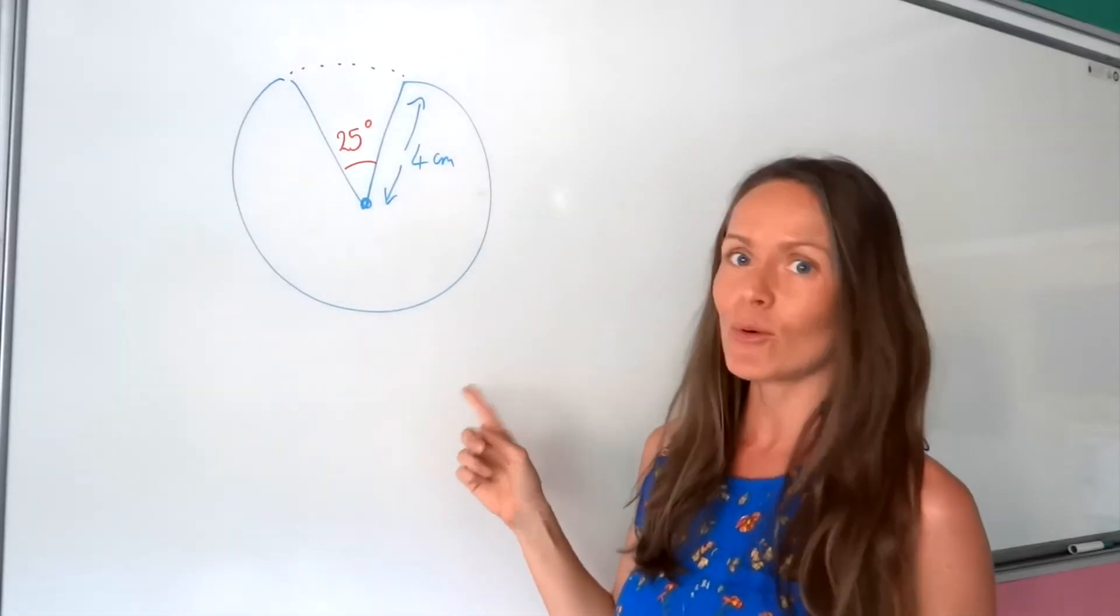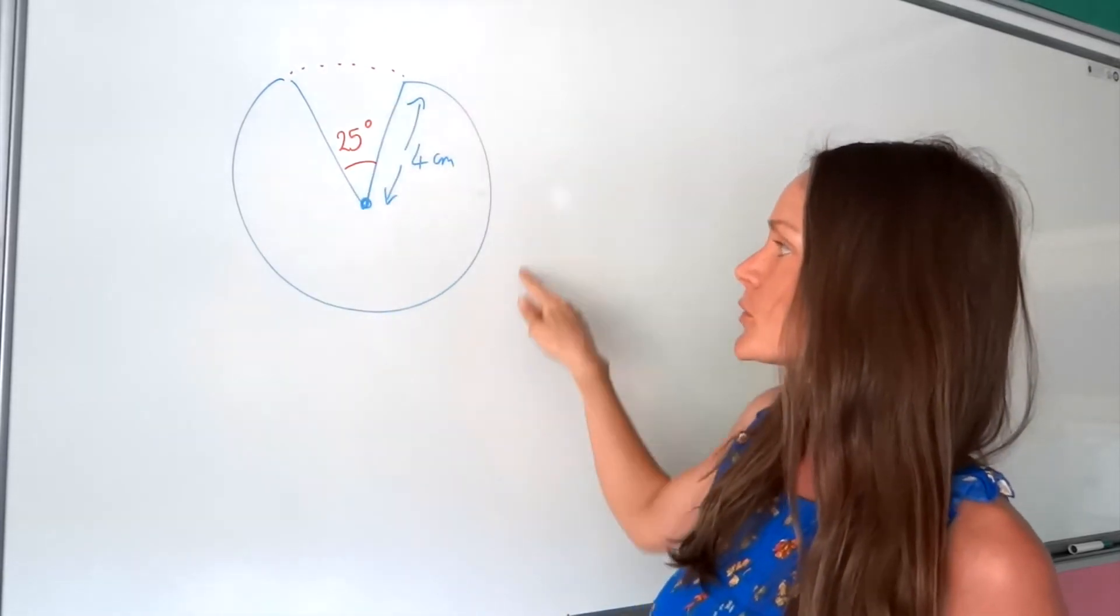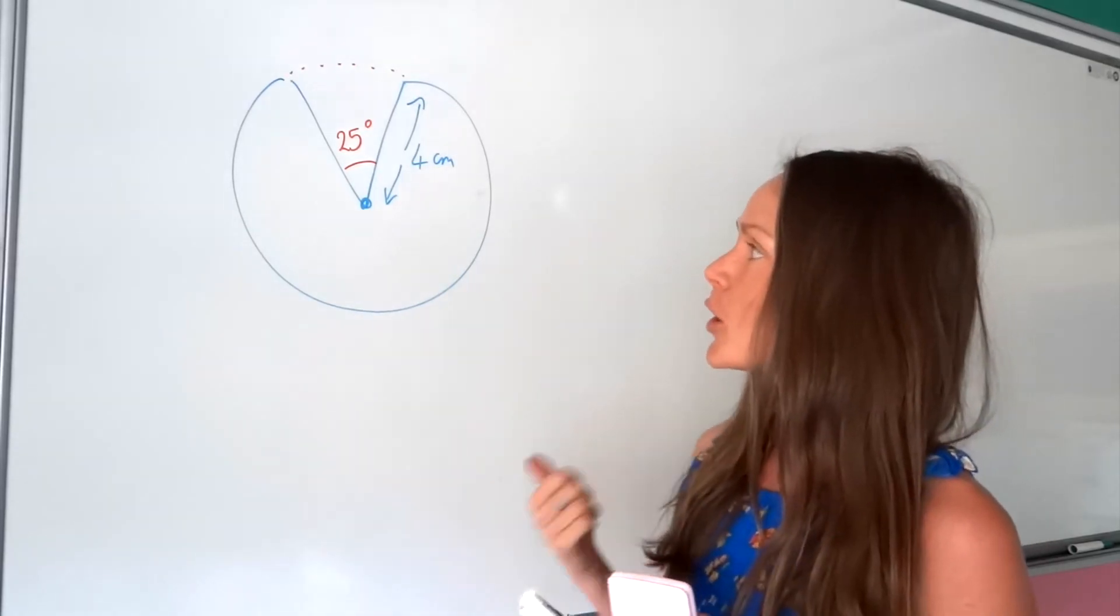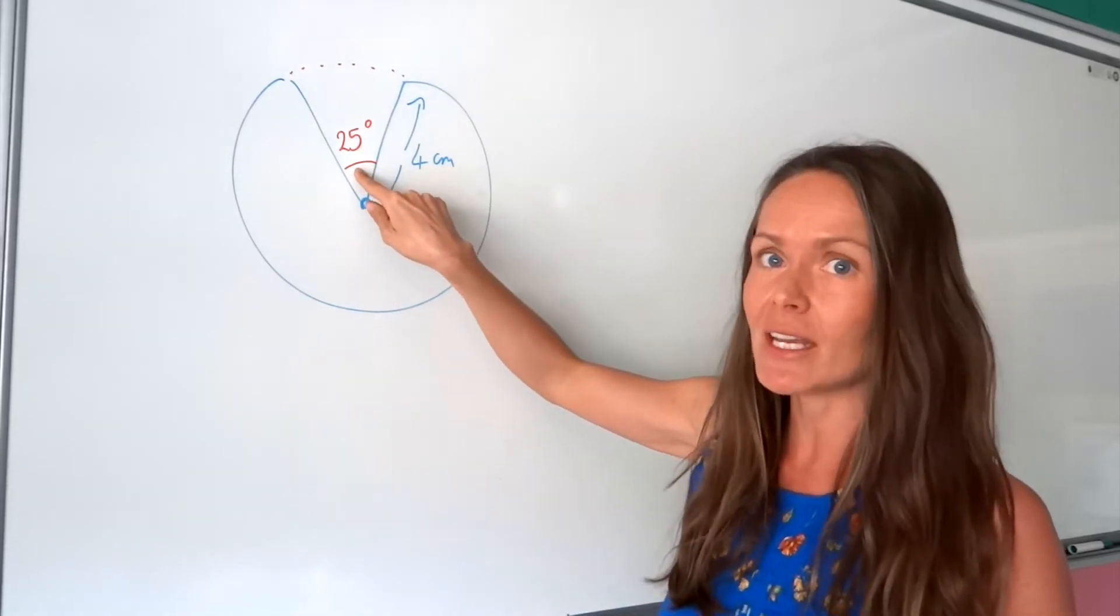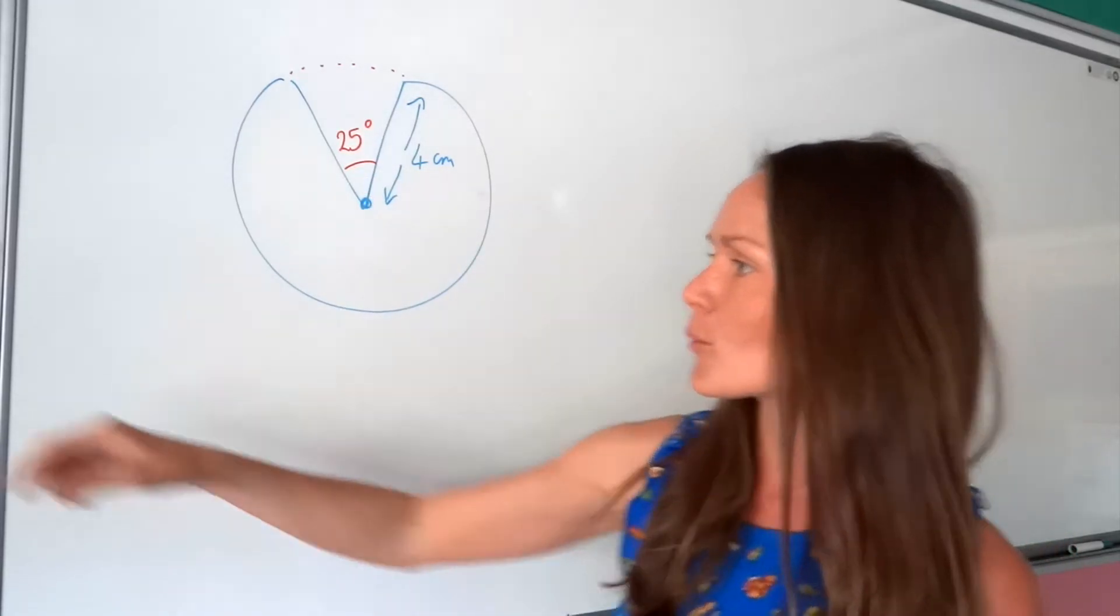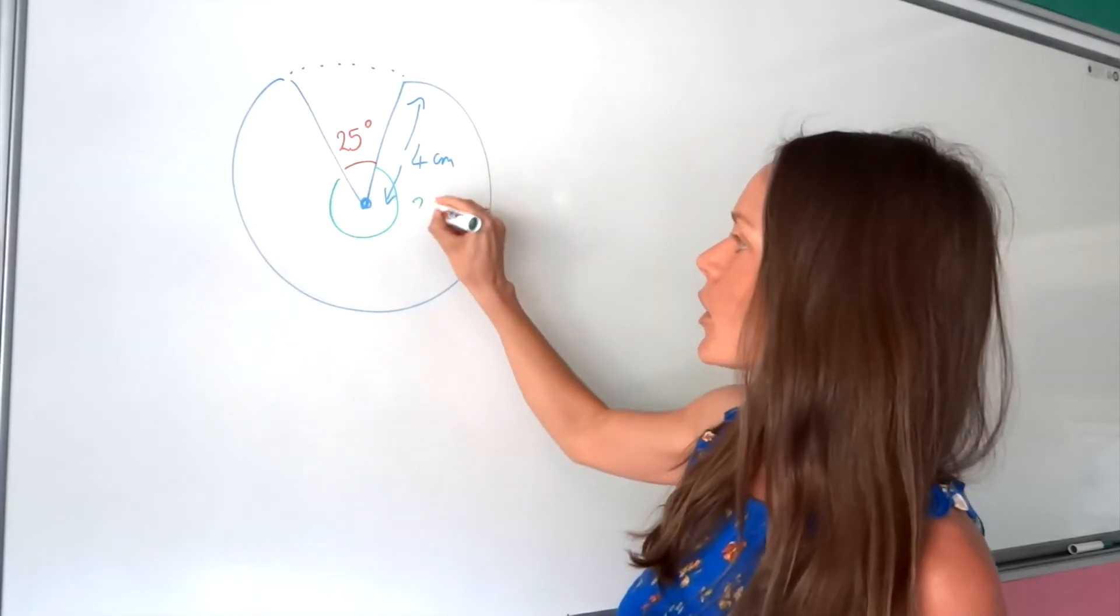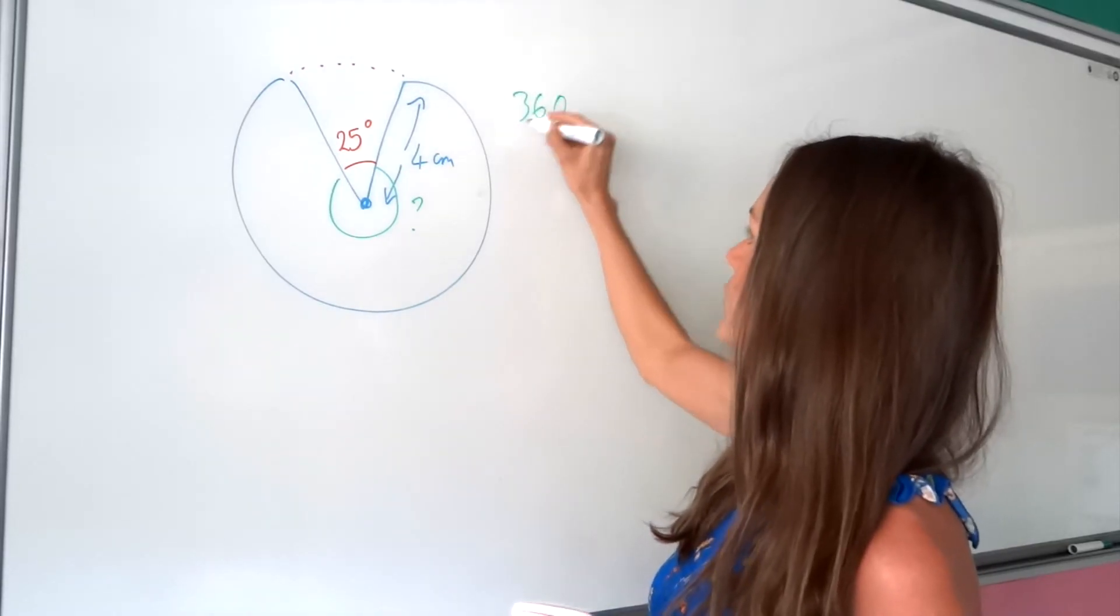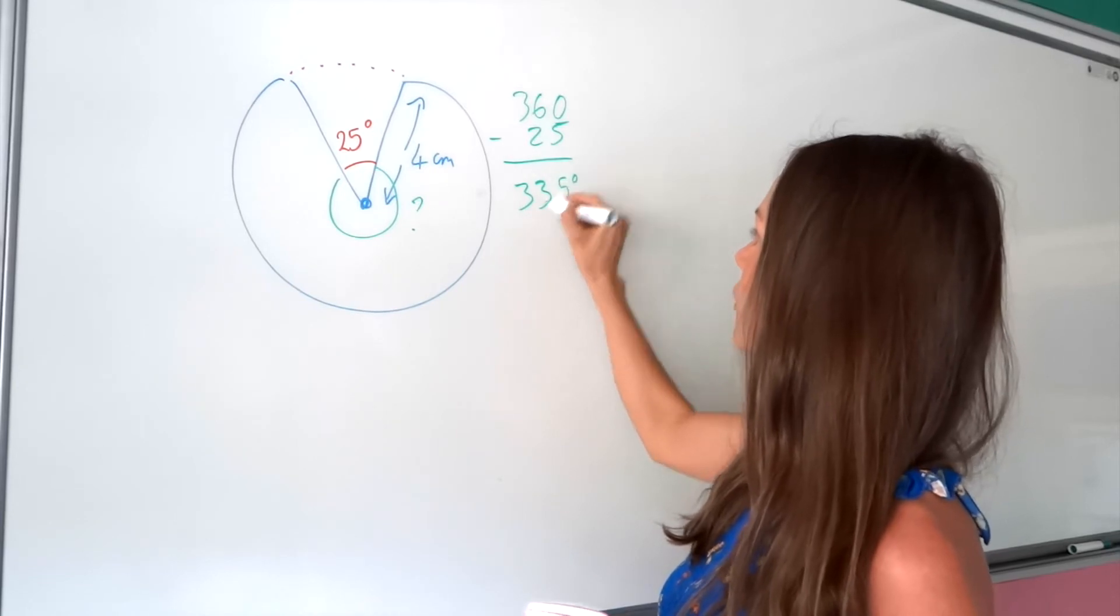Alright, so in this second example, I have to work out the perimeter of this sector. It's a big sector, it's almost a full circle. And I'm going to use the same method as before. So I need to know the number of degrees of this sector. Be careful because the degrees given here aren't actually the degrees of this sector. The degrees we need are the ones inside. So we know that there are 360 degrees in a circle. So you need to subtract that 25 from 360 to work out the number of degrees.